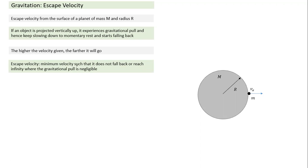If the object is projected vertically up, it experiences gravitational pull and keeps slowing down. Typically it comes to momentary rest and starts falling back — that's what happens when we throw a ball or fire a bullet vertically up. The higher the velocity given, the farther it will go. So the question is: what is the velocity needed so that it does not come back? That's escape velocity — minimum velocity such that it does not fall back.